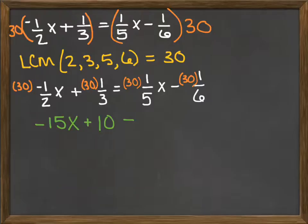Thirty times one-fifth x, which would be six x, and thirty times negative one-sixth, which would end up to be negative five. Now I want to solve this equation.